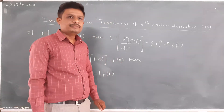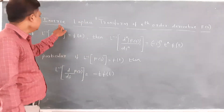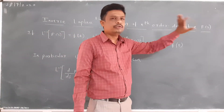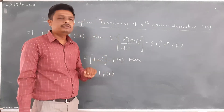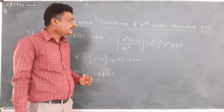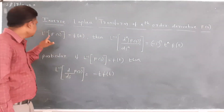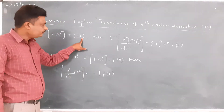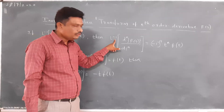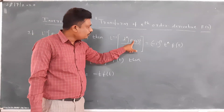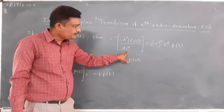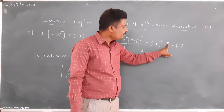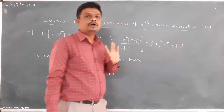Today in this video I am going to discuss inverse Laplace transform of nth-order derivative of the function f(s). For that I am going to use the result: if L⁻¹{f(s)} is equal to f(t), then L⁻¹ of the nth-order derivative of f(s) with respect to s is given by (-1)ⁿ · tⁿ · f(t).